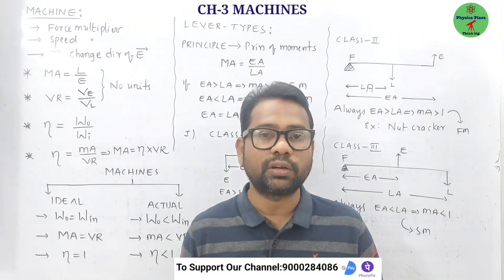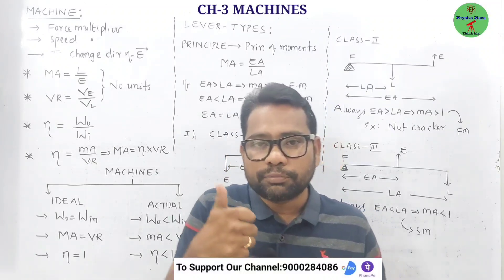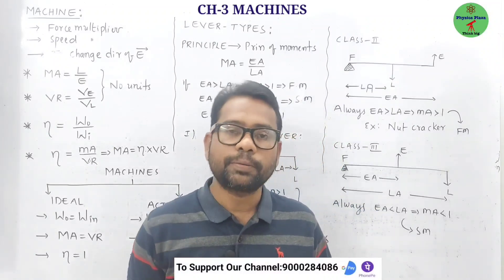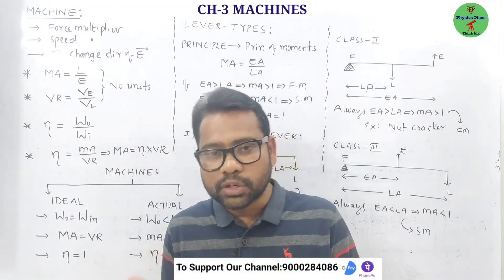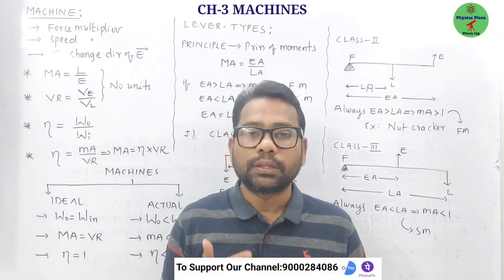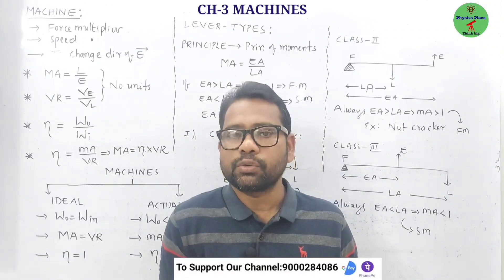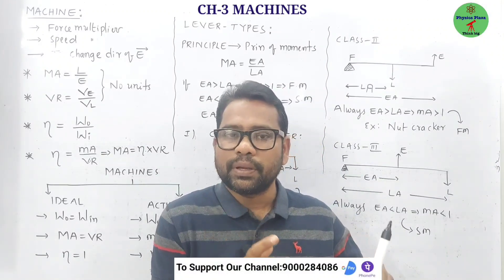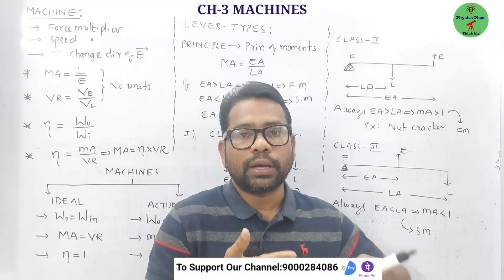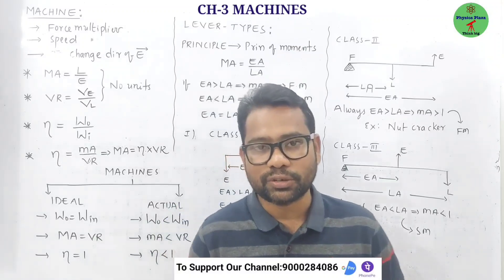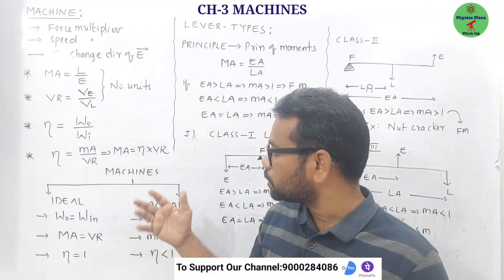Efficiency cannot be 100% because of three reasons: first, because of the presence of friction; second, because of the weights of parts of the machine; and third, because the strings used may not be purely elastic in nature. These are the reasons why a machine cannot be 100% efficient.